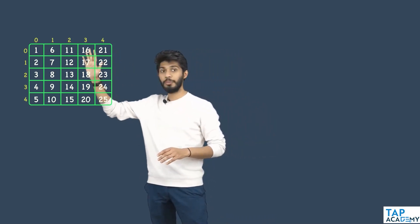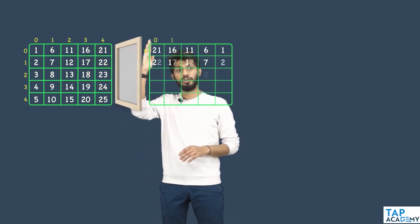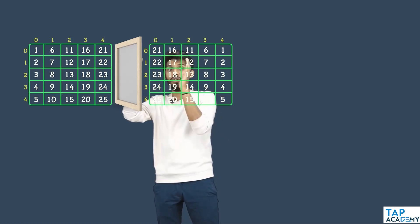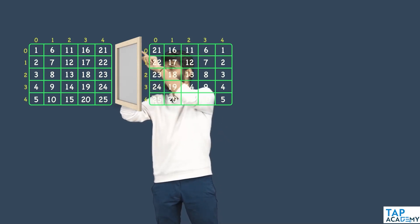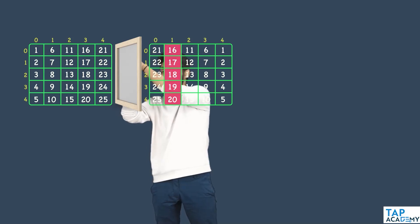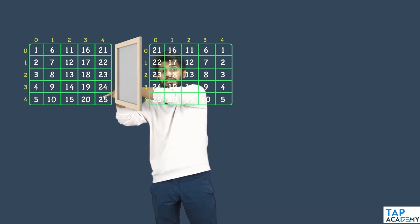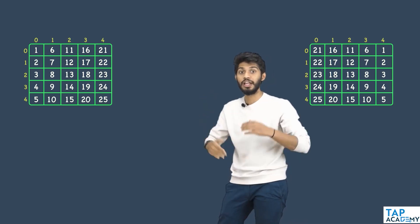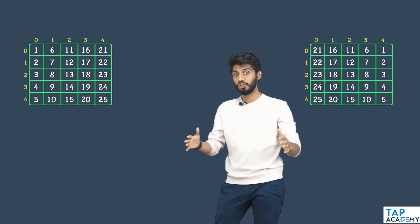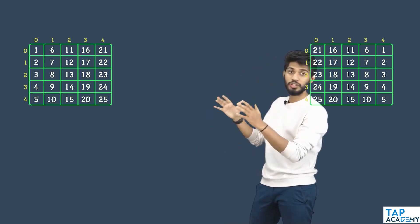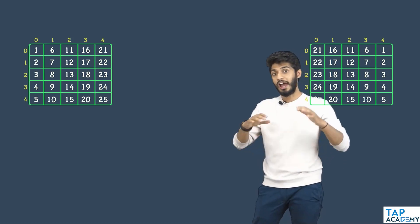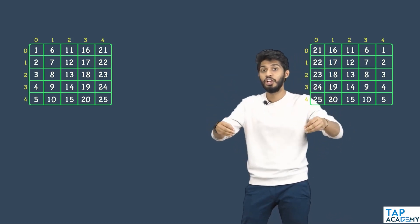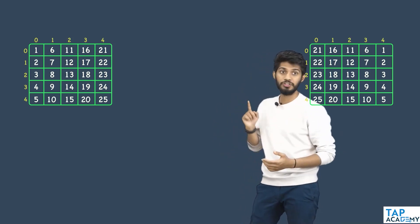If you keep a mirror on one side of the matrix, the element in the last index would come first, and the elements in the row would appear in reverse order. Observe the input and output matrices and their indexes carefully — you will clearly understand what needs to be done to achieve this particular output.